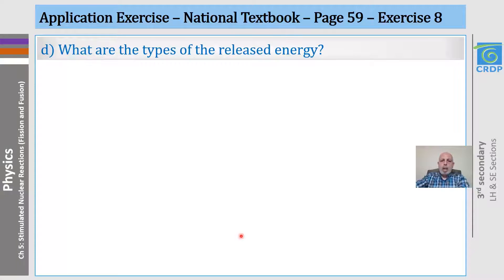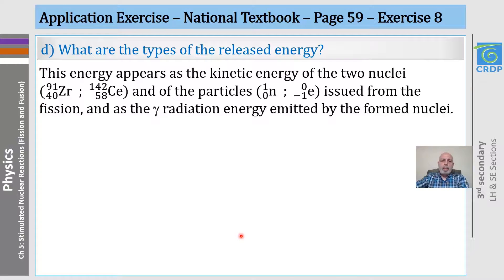What are the types of the released energy? We already explained it before, and this energy appears as the kinetic energy of the two nuclei and of the particles, in our case neutron and electron, issued from the fission, and as the gamma radiation energy emitted by the formed unstable nuclei.